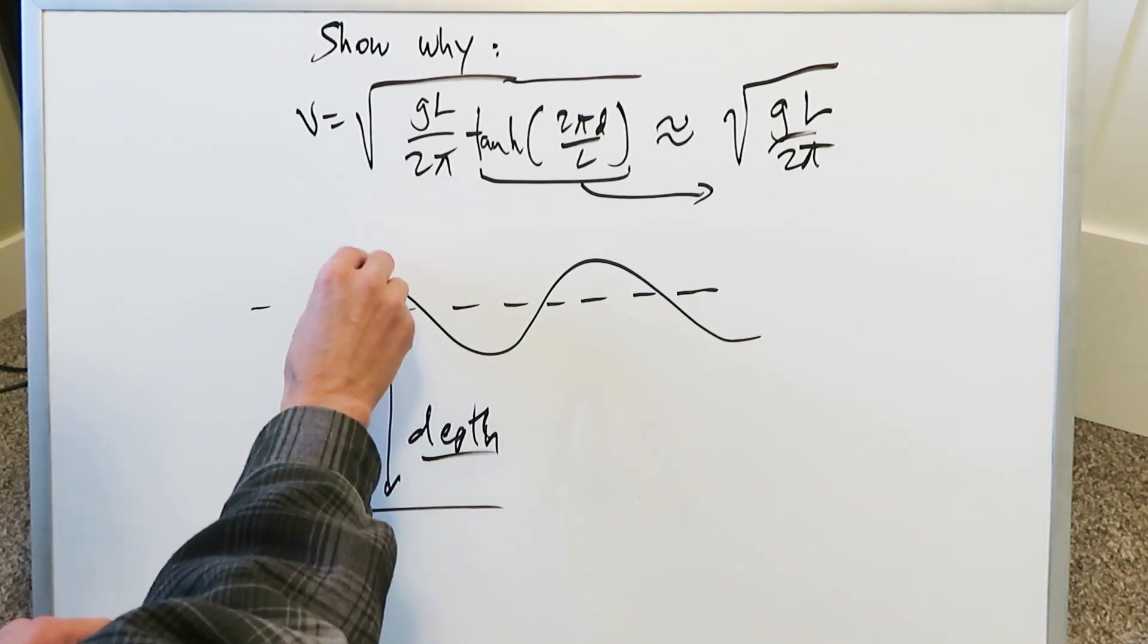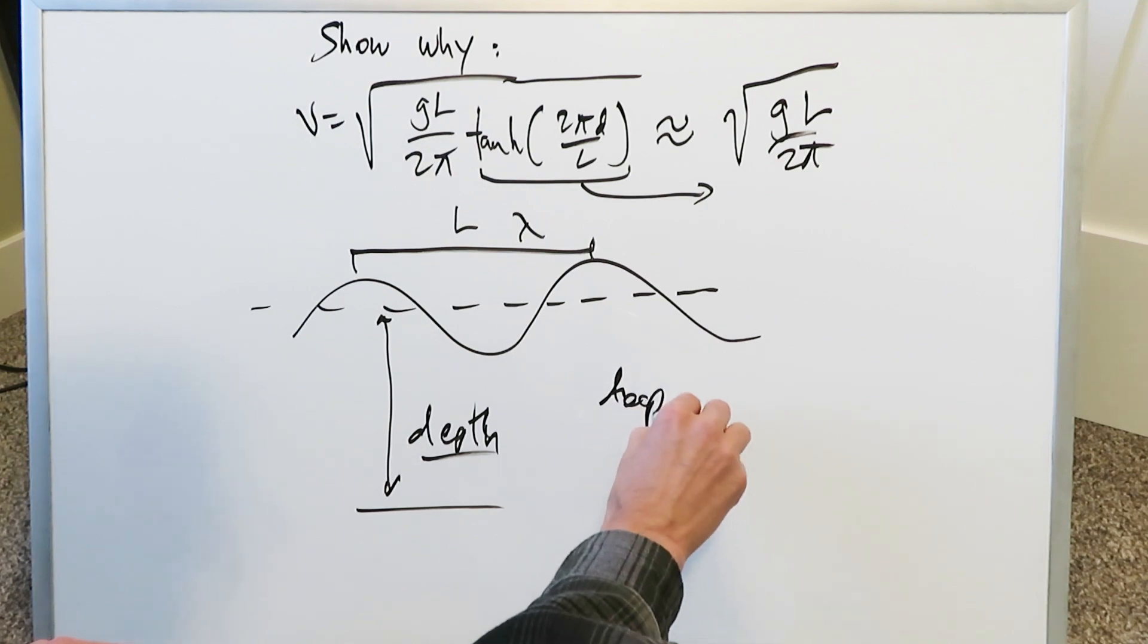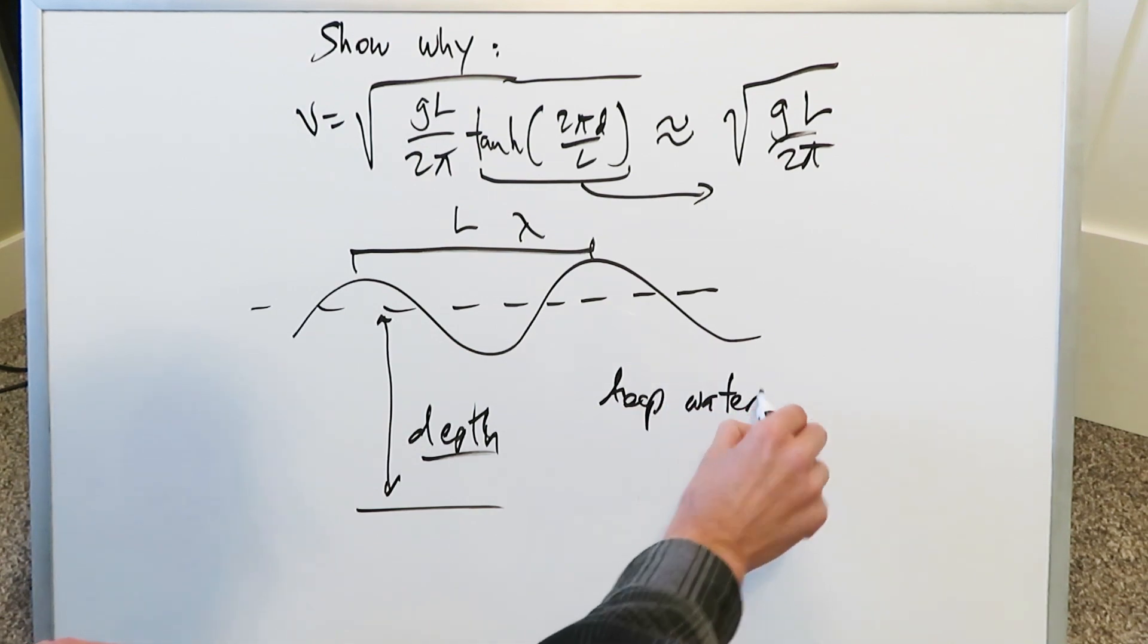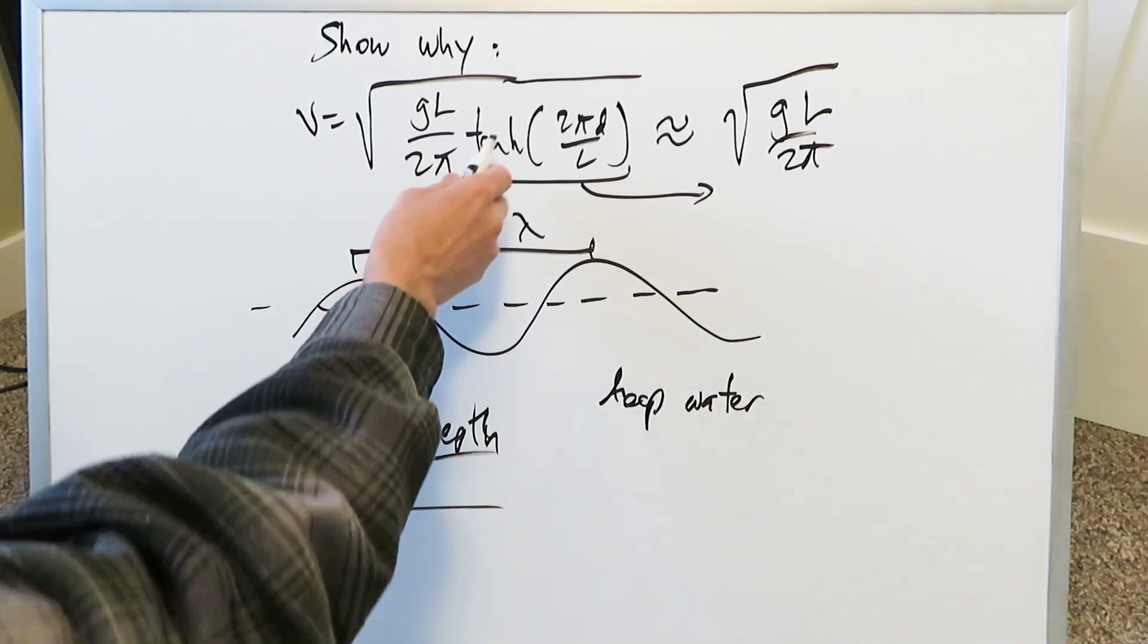And then we have a specific value here, L, which is your wavelength of that wave from one point to the next point. In deep water, the equation, as you see over there for the velocity of that wave, can very well simplify to that. And the question is why? If you think about this part right here, the hyperbolic tangent component, we have a specific ratio in there.